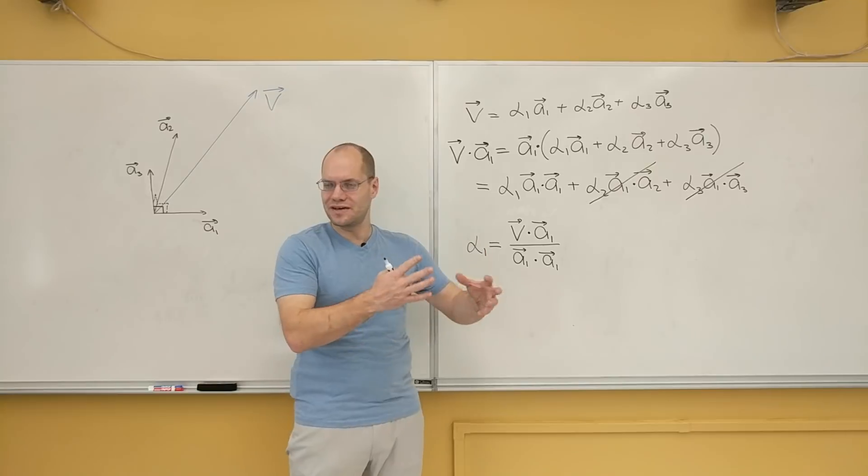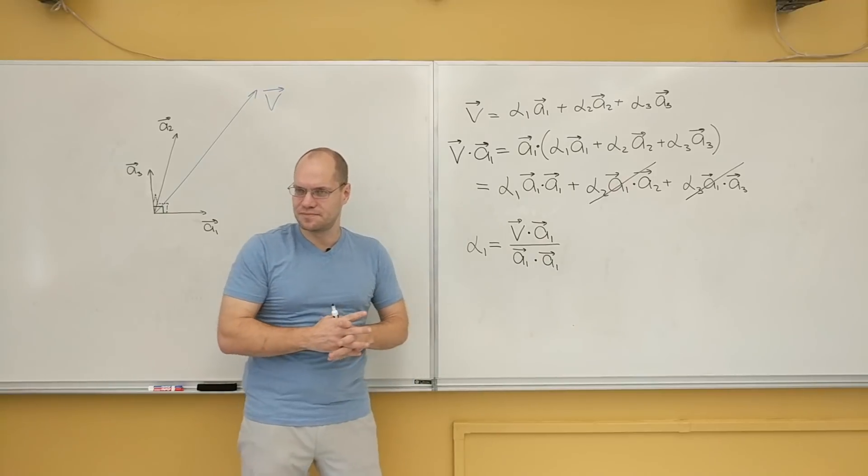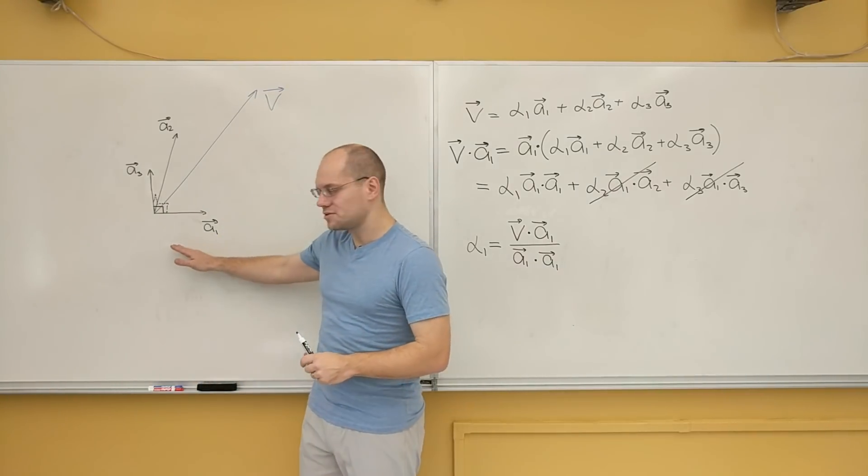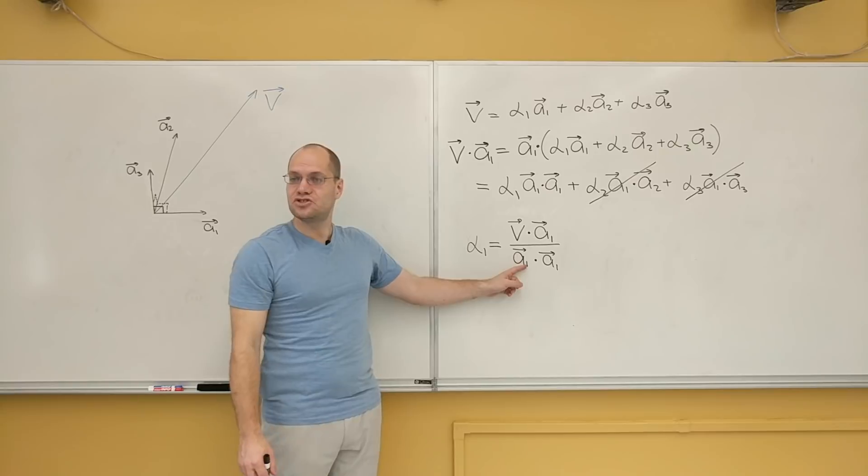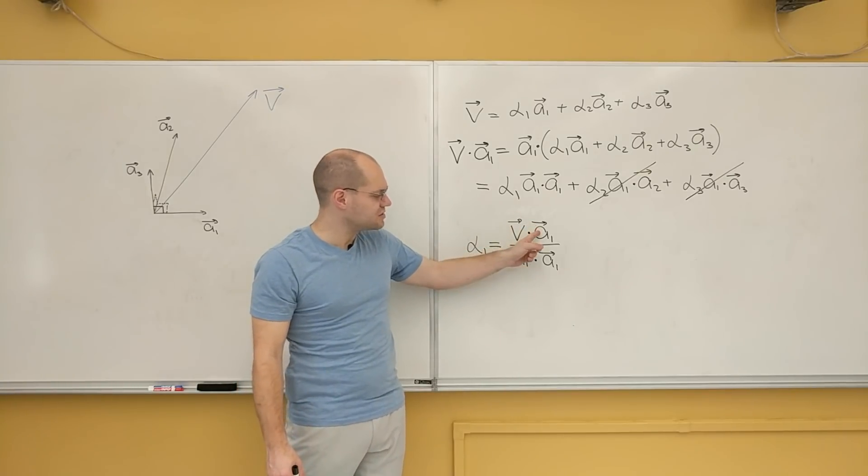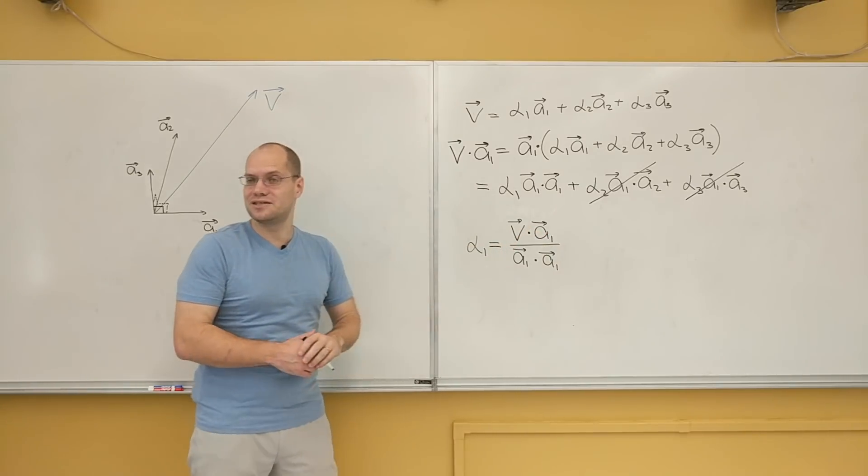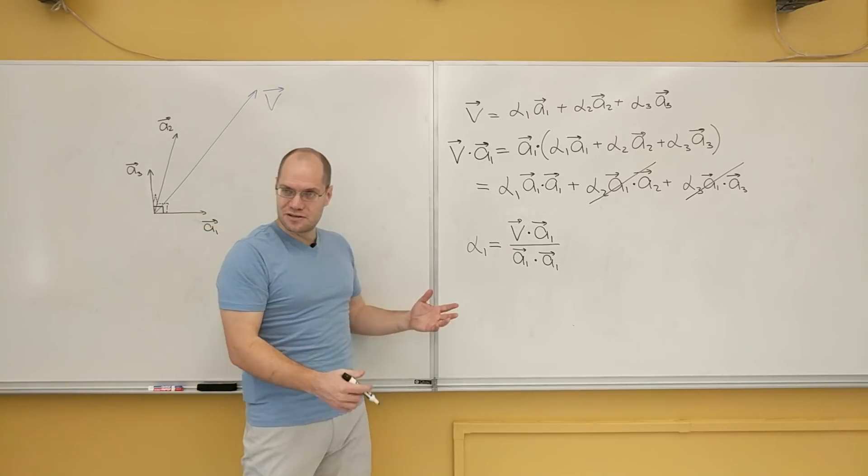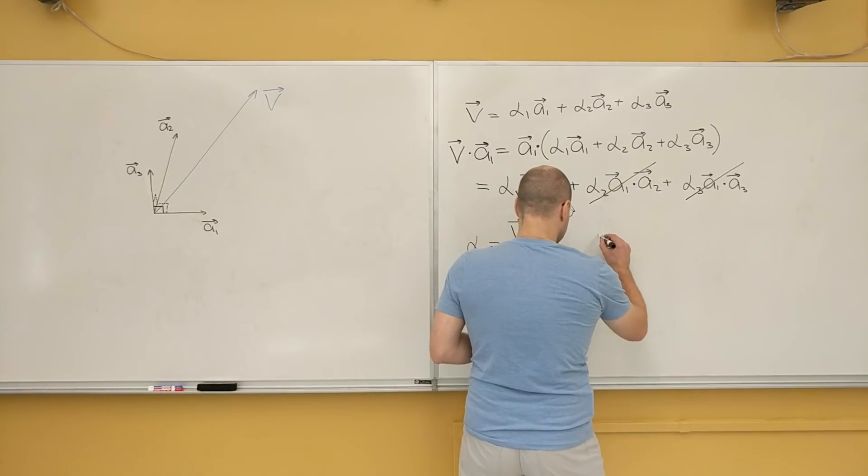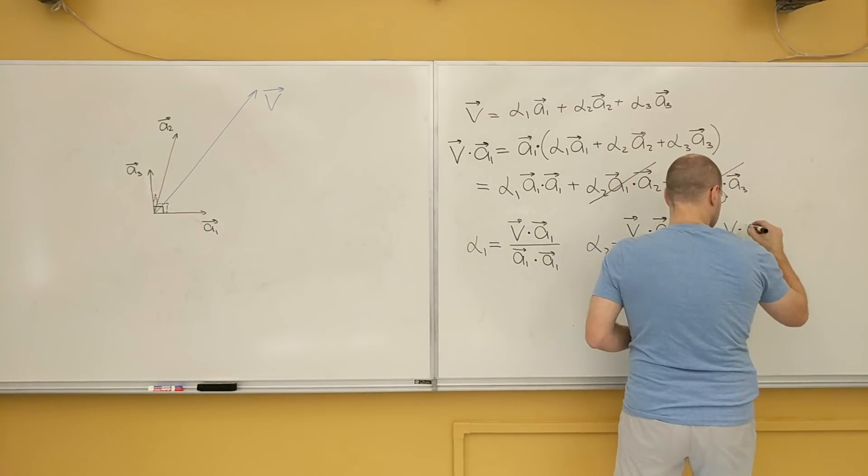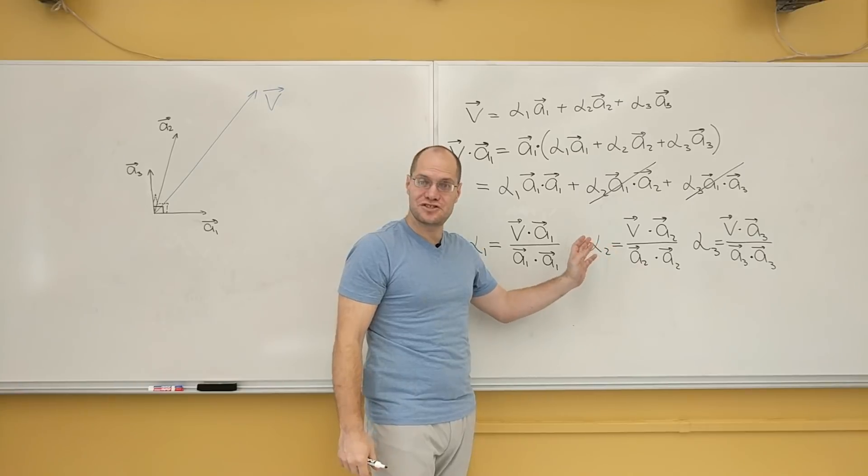Usually it involves solving, usually a linear decomposition problem involves solving a coupled linear system. But not when the basis is orthogonal. When the basis is orthogonal, you can get your coefficients one at a time simply by evaluating two dot products. You have to dot the vector with the corresponding element of the basis and then divide it by that element of the basis dotted with itself. And by similar logic, we will get similar expressions for alpha 2 and alpha 3. So let's write them down. So we can get all of the decomposition coefficients one at a time.